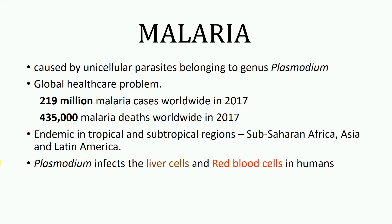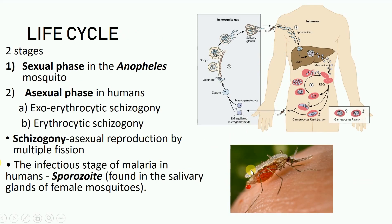Plasmodium, the parasite, infects the liver cells and the red blood cells in human beings. The life cycle of the Plasmodium can be divided into two stages: the sexual phase and the asexual phase. The sexual phase takes place in the Anopheles mosquito and the asexual phase takes place in humans.